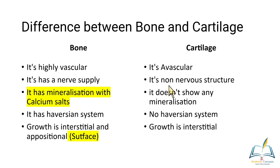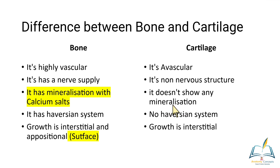Most cartilages form the articular surface in some form. Articular cartilage and other cartilages are constantly in motion, so they are not provided with any nerve supply. There is also a huge structural difference in mineralization — bone is heavily mineralized with calcium salts, whereas cartilage does not show any mineralization; there is no calcium in cartilage. So cartilage appears very soft and flexible whereas bone is harder and more rigid. Bone has a structurally arranged lamellar pattern called the Haversian system, whereas cartilage does not have any such system.